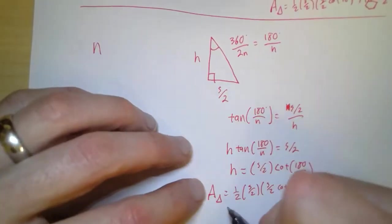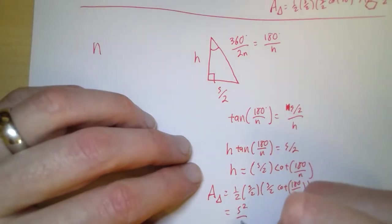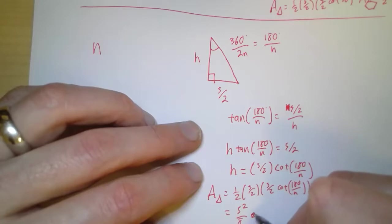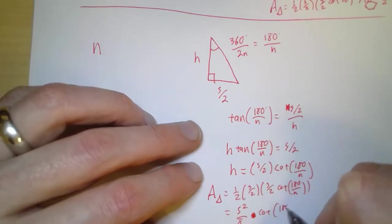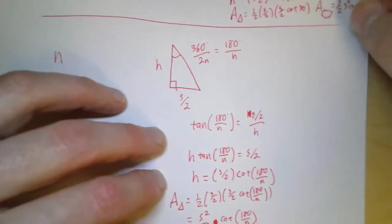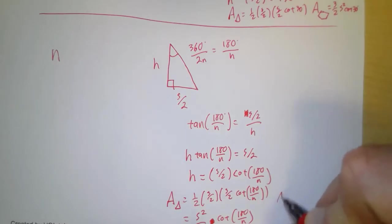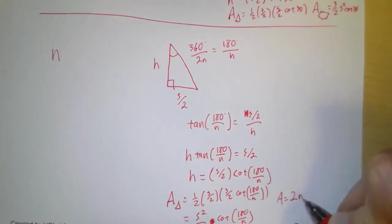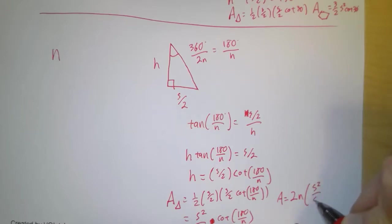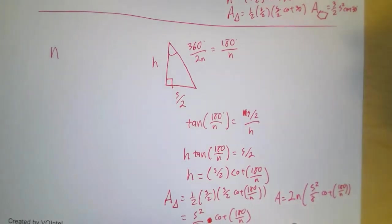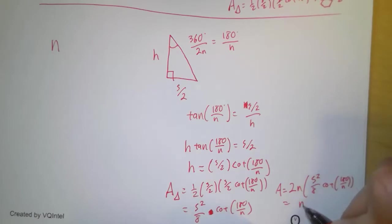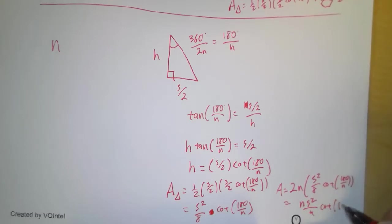The area of the triangle is one half the base — s over 2 — times the height, s over 2 times cotangent of 180 over n. Simplified, that's s squared over 8 times cotangent of 180 over n. To find the area of the polygon, we multiply that by 2n. So the area simplifies to n times s squared over 4 times cotangent of 180 over n. And so there is our formula.